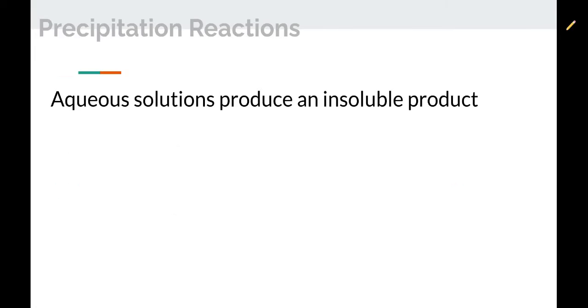The second type of reaction for our consideration is what's called a precipitation reaction. These things are pretty easy to understand. The only thing is, to predict them, you have to have a pretty good grasp on understanding what things are soluble in water and what things aren't. What happens in a precipitation reaction is two aqueous solutions react with each other, and one of the products that they make doesn't dissolve in water.